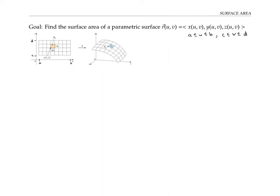We'll get the patches on our surface by first creating little sub-rectangles in the uv-plane, dividing the interval from a to b into sub-rectangles in the u direction, and dividing the interval c to d into sub-rectangles in the v direction. Each little sub-rectangle has width delta u and height delta v. I'll call the lower-left point u sub i, v sub j, where i indexes sub-intervals in the u direction and j indexes sub-intervals in the v direction.